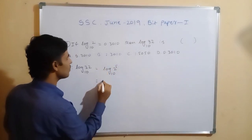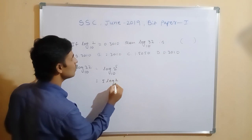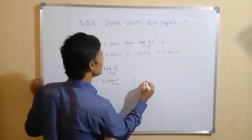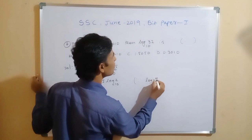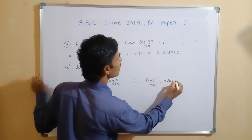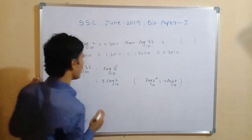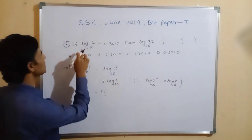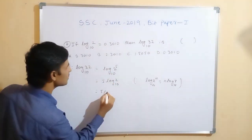So 5 into log 2 base 10. The formula here: log x to the power of n base a equals n into log x base a. I applied this formula, so 5 into log 2 base 10, and log 2 base 10 equals how much they given here?